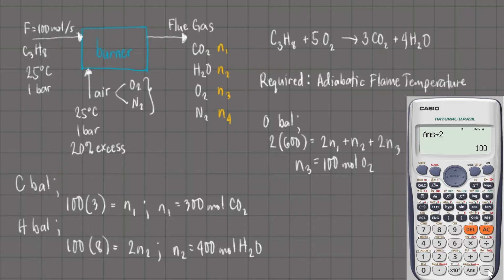Next, the nitrogen balance: the amount of nitrogen fed from air equals the amount of nitrogen in the flue gas. Since we assume nitrogen is inert — its combustion products are negligibly small compared to other components — the nitrogen input equals the nitrogen output: N4 = 2,257.14 moles of nitrogen.